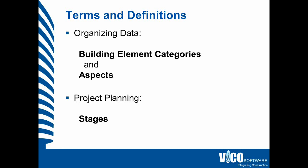Before we continue, I'd like to take a moment to clarify a number of terms and definitions that we use. For organizing the content plan and model progression specification data, we use two types of structures. One is the building element categories — those are the categories that may be defined by a classification system such as UniFormat.